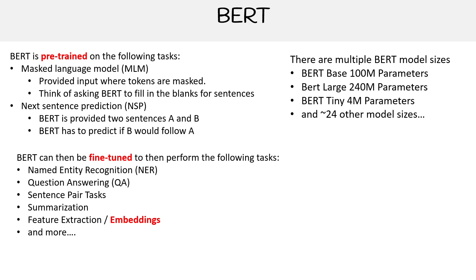If you go to Wikipedia, it tells you how much data it was trained on — something like 800 million words. The corpus text was from the Toronto Books Corpus and Wikipedia English, so it is primarily trained on English, though there are multilingual variants.